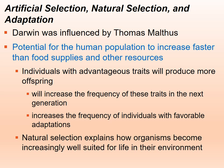As a review: Darwin was influenced by a number of scientists, one of them being Malthus, who studied changes in populations. Darwin noted that the potential for human population to increase faster than food supplies and other resources is possible. Individuals with advantageous traits will more likely produce more offspring, which increases the frequency of those traits in the next generation, also increasing the frequency of individuals with favorable adaptations in that environment. This can explain how organisms become more suited for their environment.